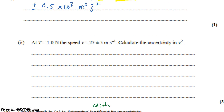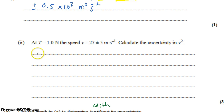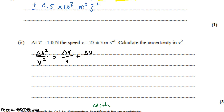The next part says that at tension equals 1 newton, the speed is 27 plus or minus 5 meters per second. We want to calculate the uncertainty in V squared. They gave us the value for velocity and the uncertainty for velocity, and they want us to propagate the error through to V squared. For propagation of uncertainty for values that you multiply — squaring is multiplying V times V — you add the fractional uncertainties. The fractional uncertainty in V squared equals the fractional uncertainty in V plus the fractional uncertainty in V, so twice the fractional uncertainty in V.